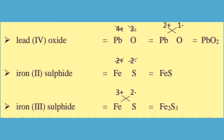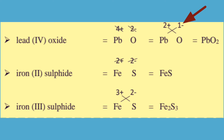For lead(IV) oxide, lead has oxidation number 4 plus and oxide is O with oxidation number 2 minus. 4 plus and 2 minus — cross the numbers: Pb gets subscript 1 and O gets subscript 2. The formula for lead(IV) oxide is PbO2.